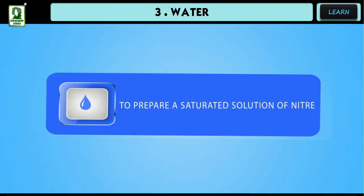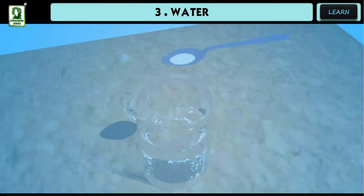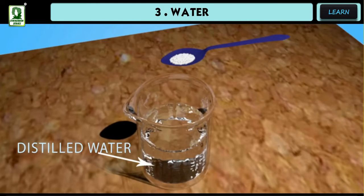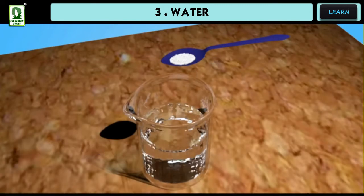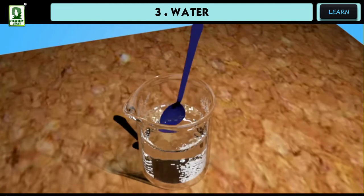To prepare a saturated solution of nitre, take 100 grams of distilled water in a beaker. Add 1 gram of nitre and stir it till the nitre dissolves.